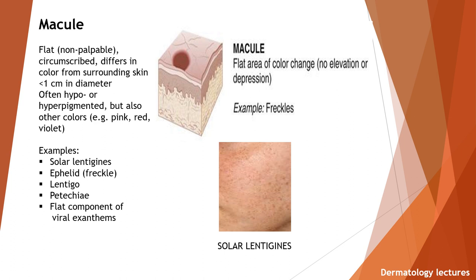What is a macule? If you rub your fingers on the skin, you will feel that it is flat, non-palpable, circumscribed, differs in color from surrounding skin, less than one centimeter in diameter, often hypo or hyperpigmented but may also present with other colors, for example pink, red, or violet. Examples are solar lentigines, freckles, lentigo, petechiae, and flat component of viral exanthems. It does not cause a change in skin texture or thickness — macules are noticed visually.